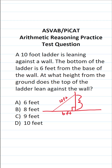Whenever you have a right triangle and a missing side, you can use the Pythagorean theorem to find the length of that missing side. The Pythagorean theorem says A squared plus B squared is equal to C squared, where A and B are the legs of the right triangle and C is the hypotenuse. The hypotenuse is always directly across from the right angle, so in this case I know C is 10. I can let this missing side be A, and I can let B be 6 feet.